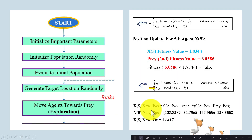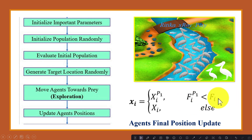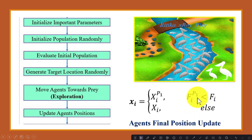We have updated the positions for all five pelicans in the search space and computed new fitness values. To prevent search agents from moving to non-optimal locations, we compare the new fitness value with the older fitness value. If the new fitness value is better, we consider the new position; otherwise we keep the older position.